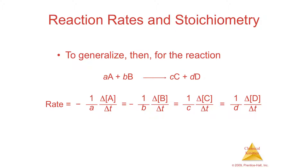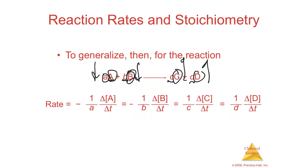So if you have a two-to-one relationship in the balanced equation, your rate is expressed as negative one over the coefficient times the change in concentration over time. It looks awful, but really you just have a coefficient and a concentration. For reactant A with coefficient a, it's negative one-over-a times Δ[A]/Δt. For reactant B with coefficient b, it's negative one-over-b times Δ[B]/Δt.